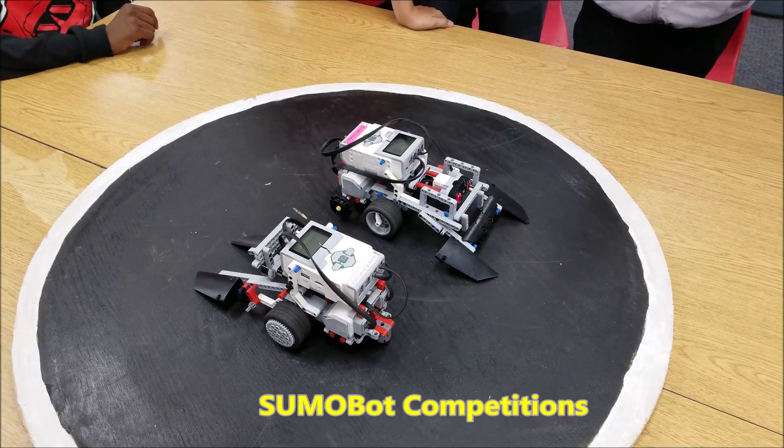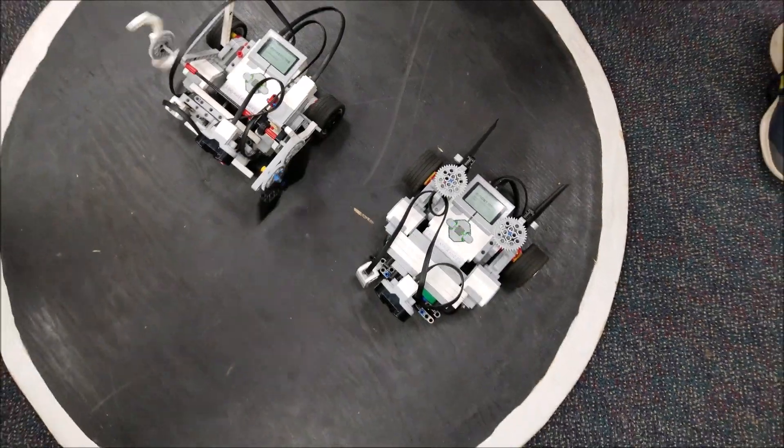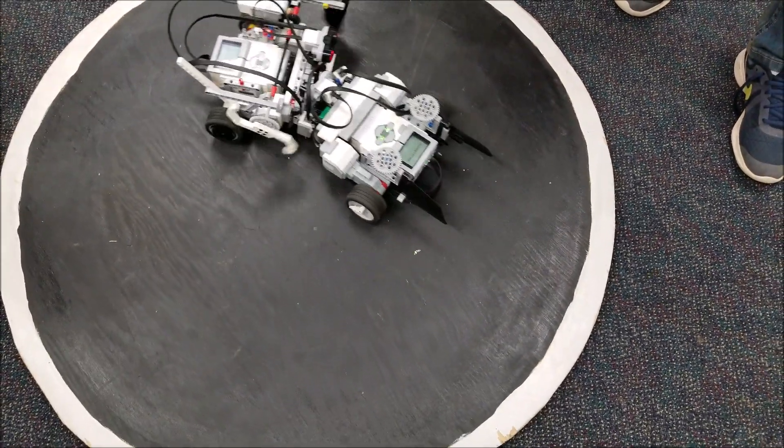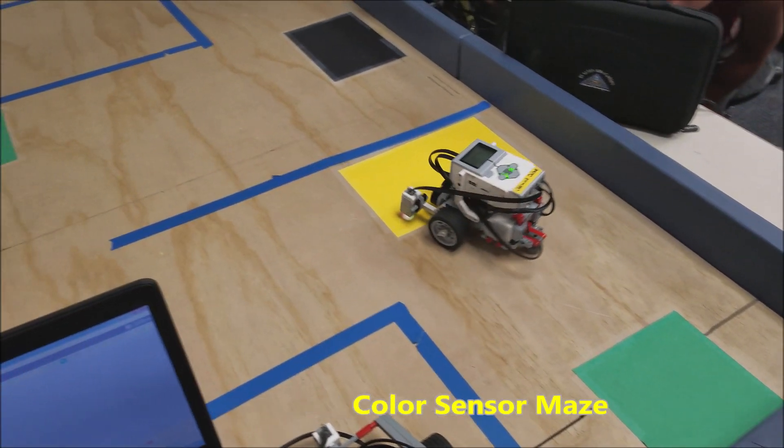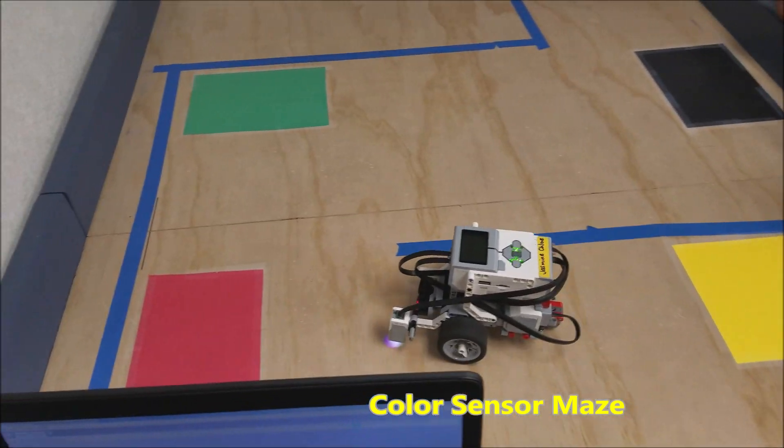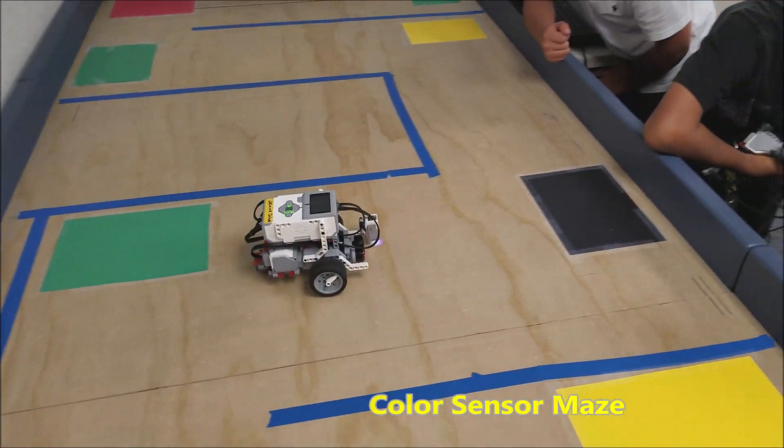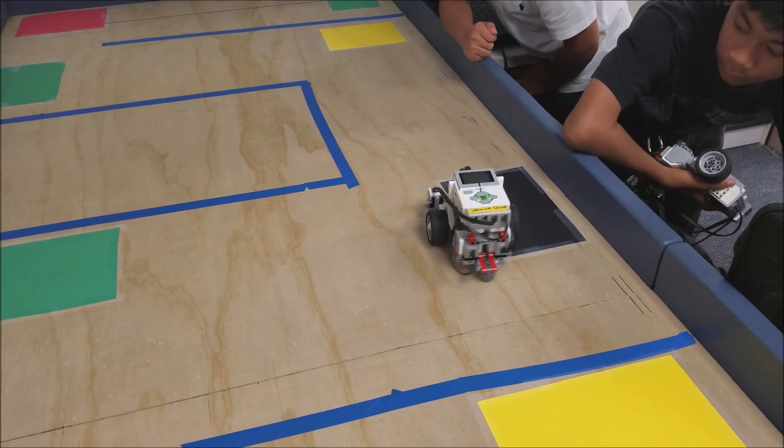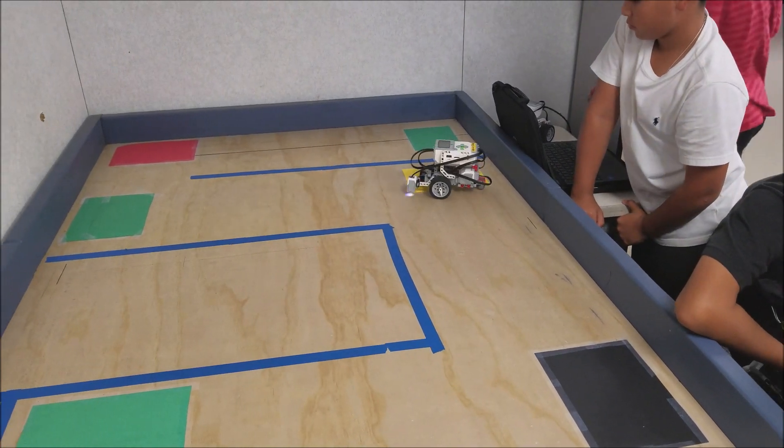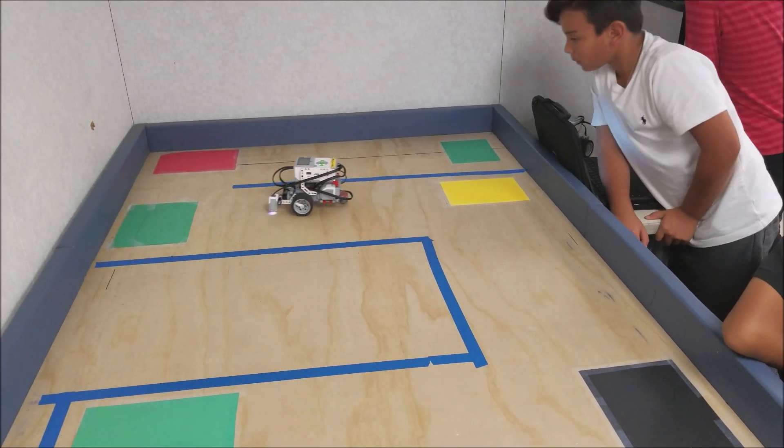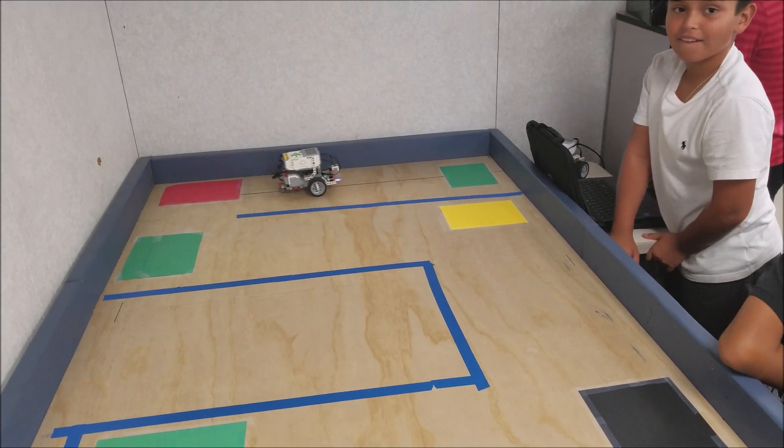You can always bust out a sumo bot competition - they're going to need to know their color sensor and their distance or ultrasonic sensors. Feel free to have color sensor mazes where they have to navigate a maze with different colors directing their robot to go left or right. And then you can also have line following races where they can follow a line and race another robot.